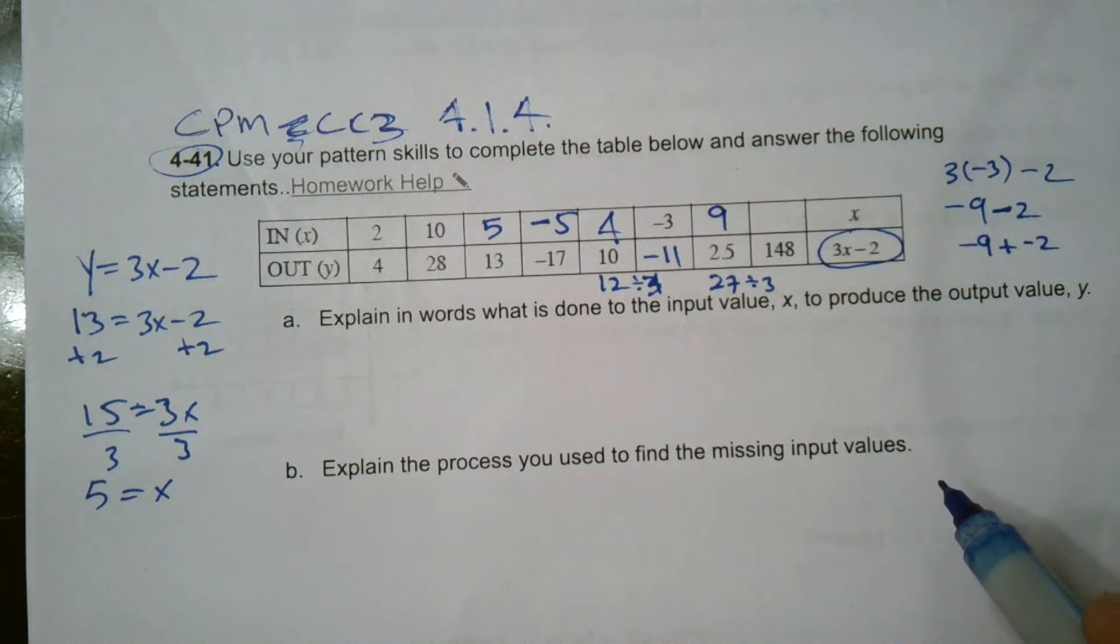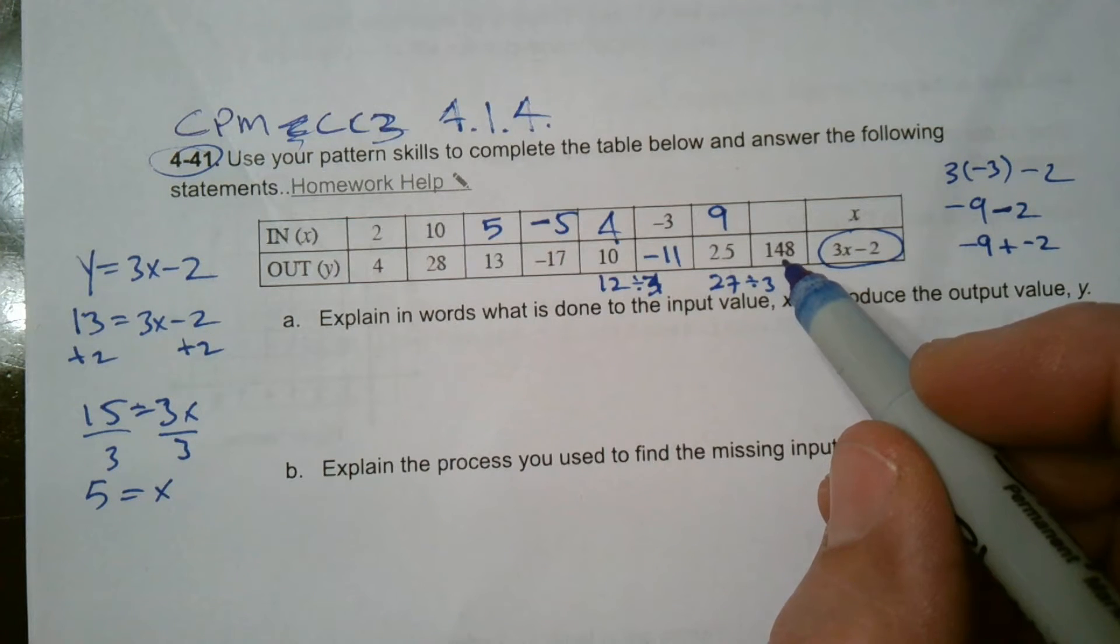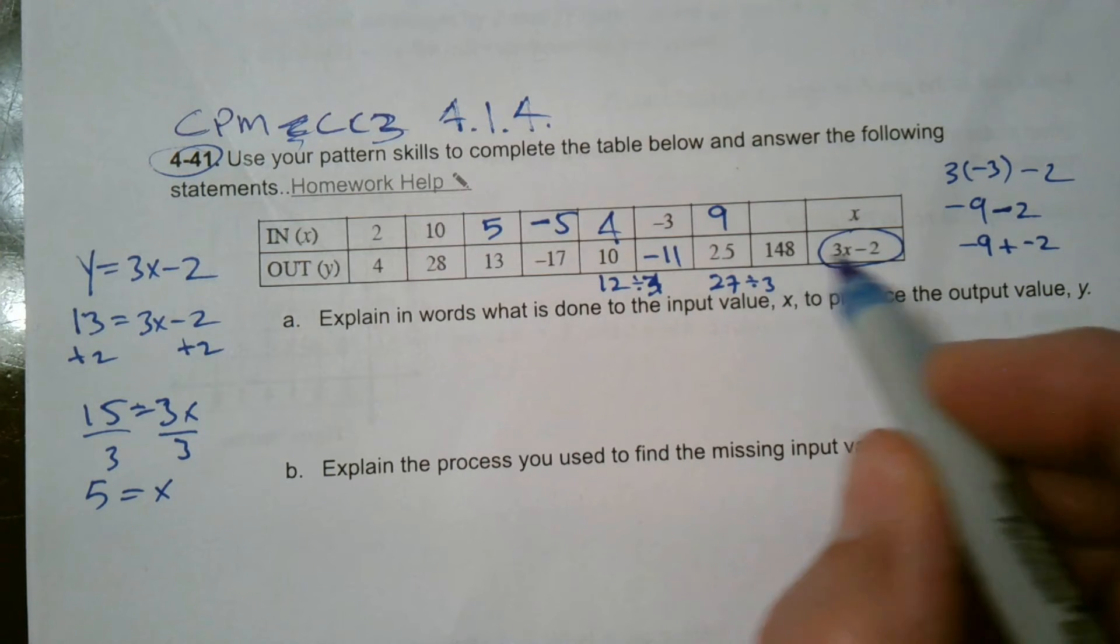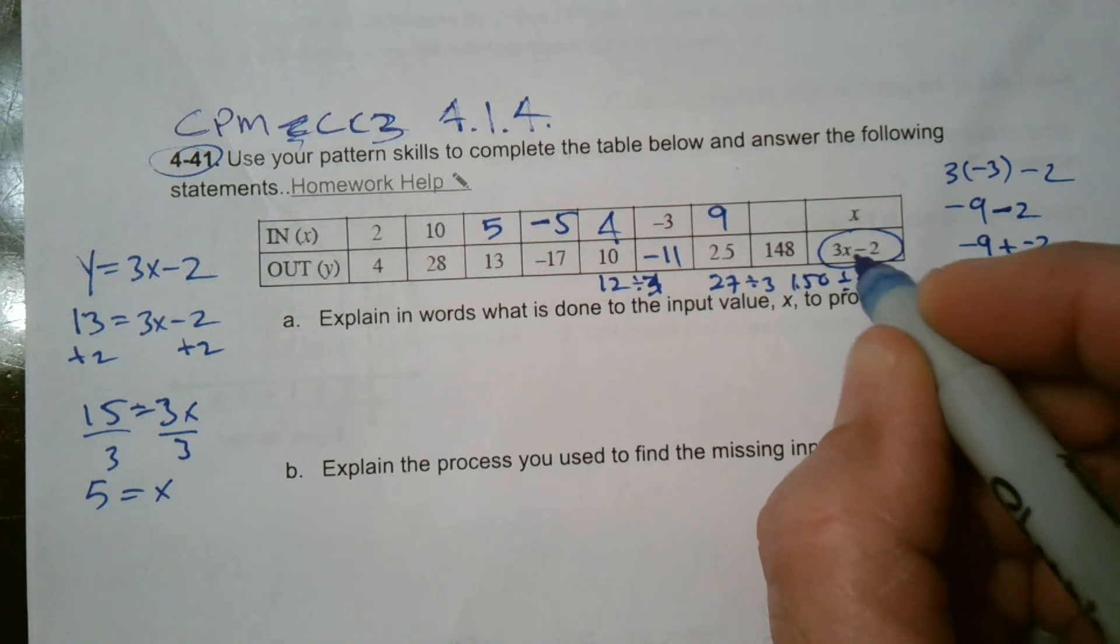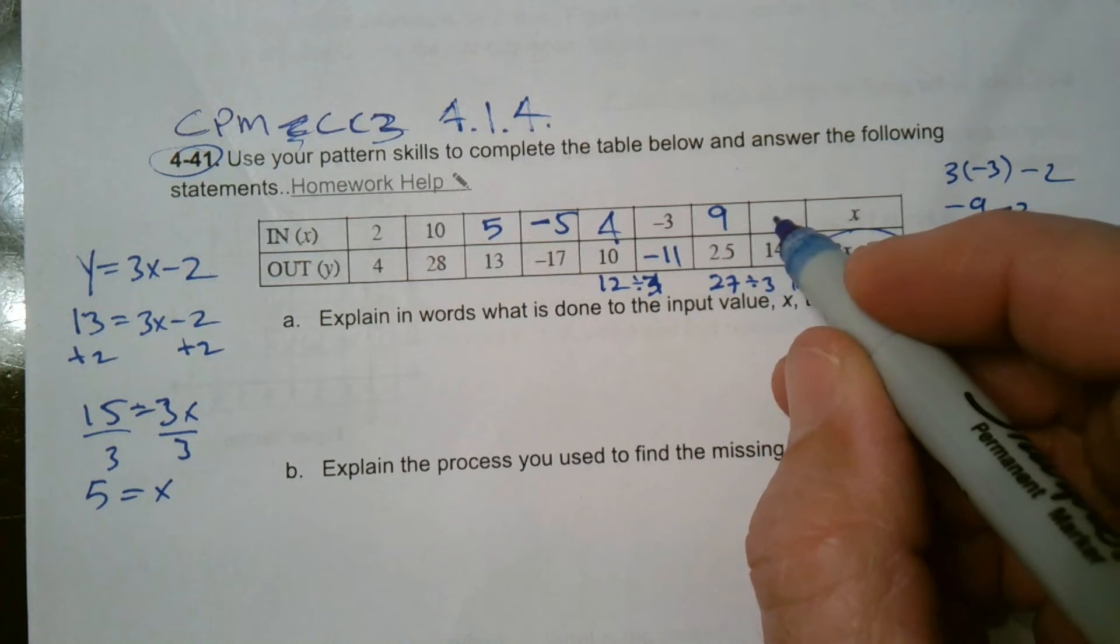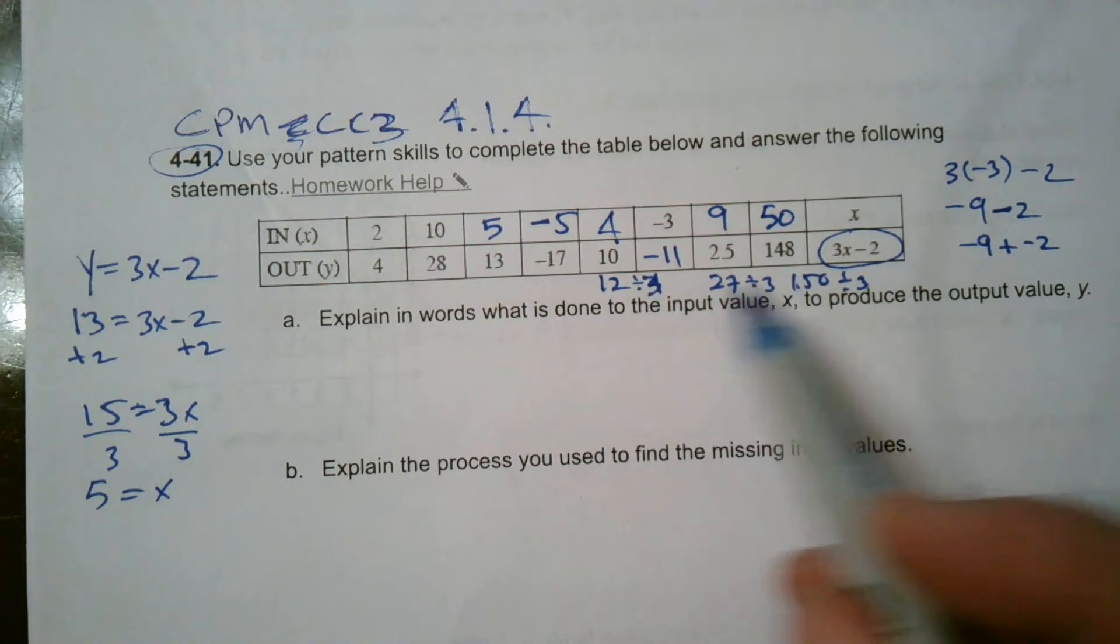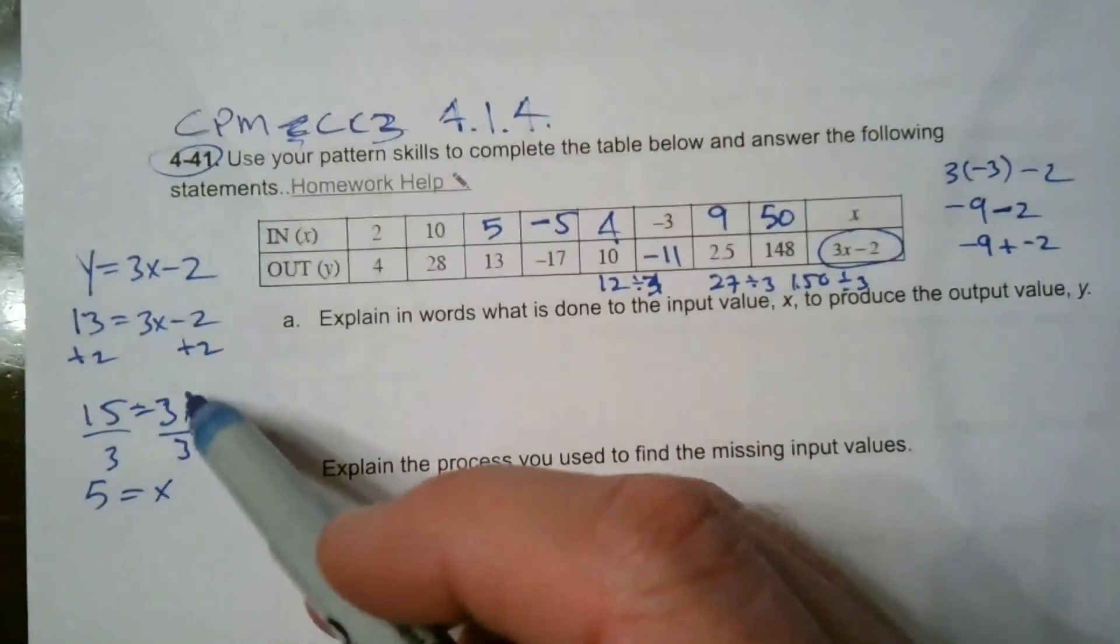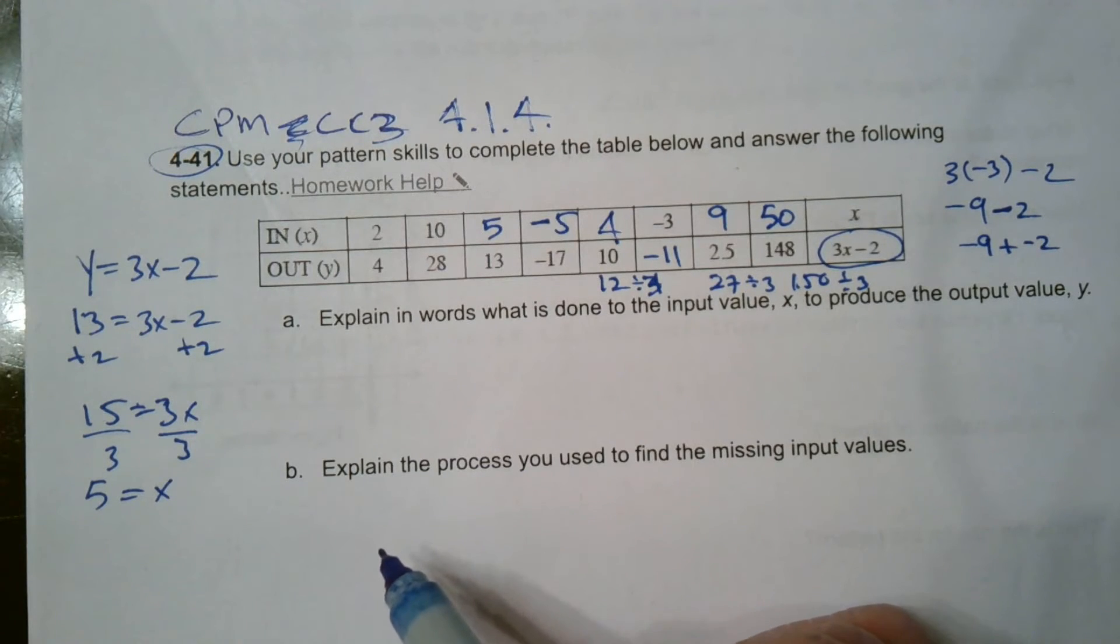Last one, the Y is 148. So I can once again do the work backwards. 148 plus two instead of minus two is 150. And then 150 divided by three instead of times three, because I'm working backwards to find the X, I get 50. So it's working backwards. You can look at the math that way, or you can actually plug in your Y that you're trying to then find the X for and solve for X using your solving equation skills.